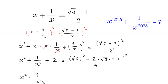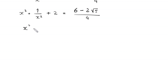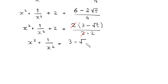So x squared plus 1 over x squared plus 2 is equal to (6 minus 2√5) divided by 4. We can factor out 2 from the numerator on the right side, giving 2(3 minus √5) divided by 4, which simplifies to (3 minus √5) over 2. Therefore x squared plus 1 over x squared equals (3 minus √5) over 2.